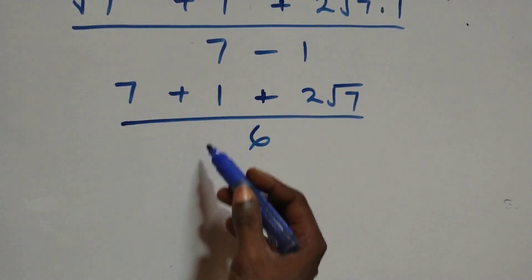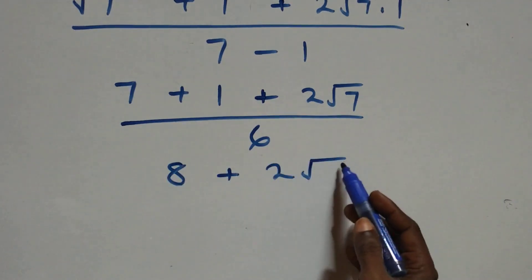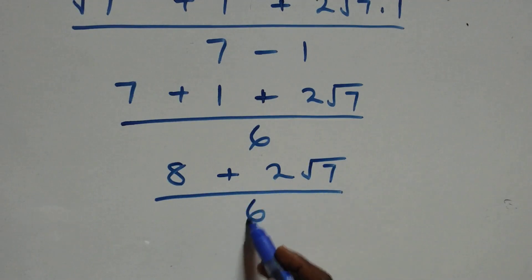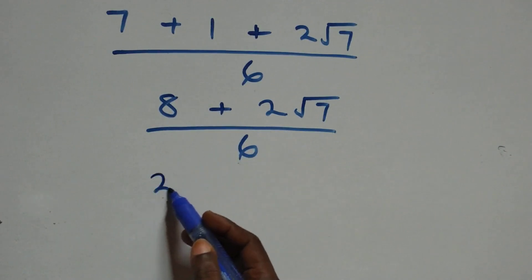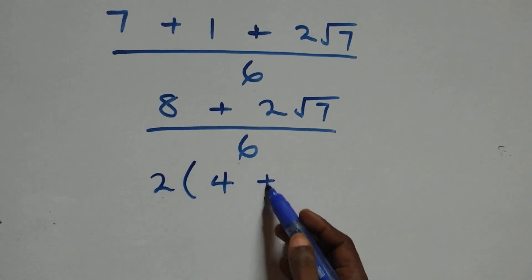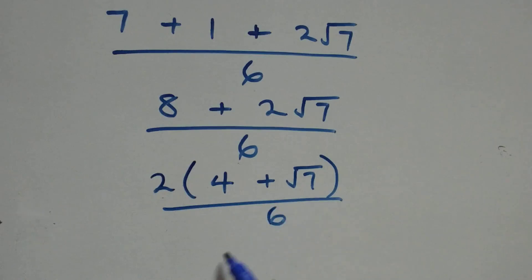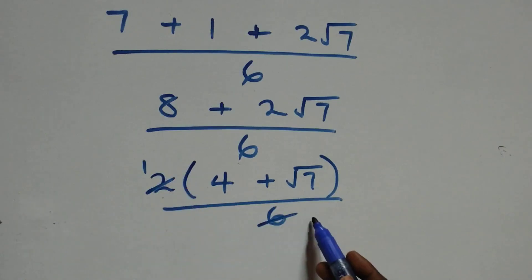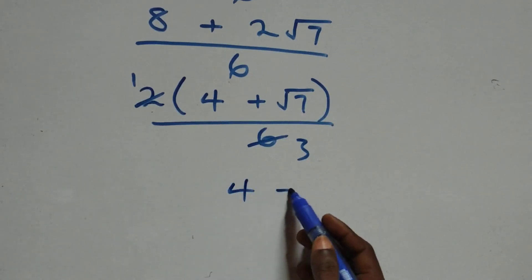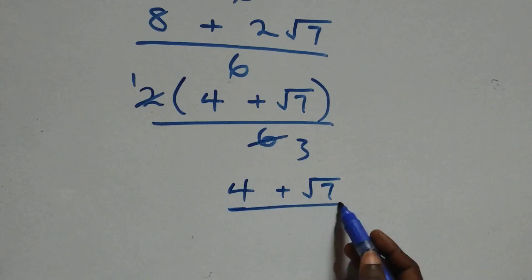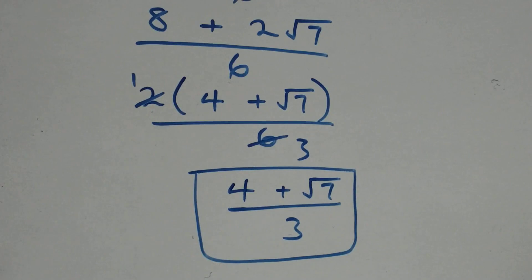So we have (8 + 2√7) / 6. Factoring out 2 from the numerator gives 2(4 + √7) / 6, which simplifies to (4 + √7) / 3. This is the simplified form from Method 1.